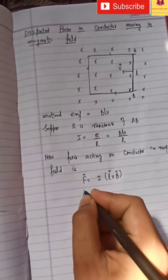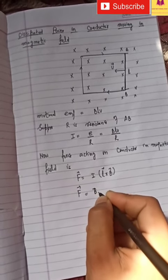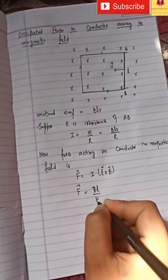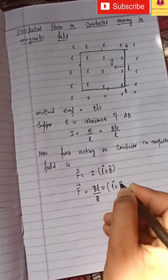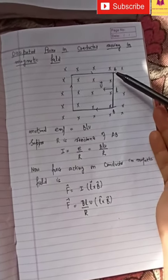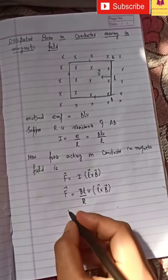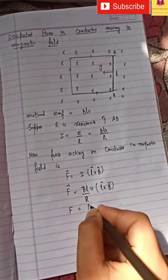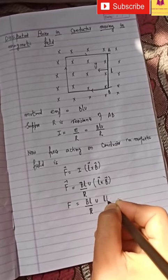I is nothing but BLV by R. Let us take L and B having perpendicular direction. Here, this is L, and into the plane of paper there is magnetic field. So it has perpendicular direction. So we can say it is BLV by R times LB.